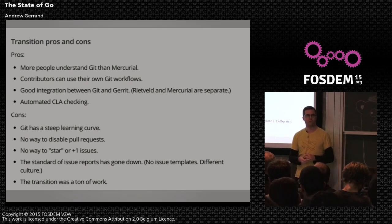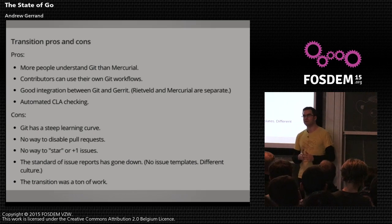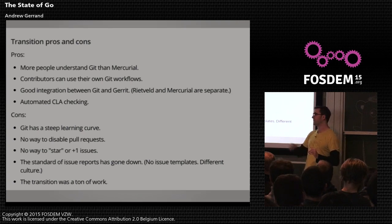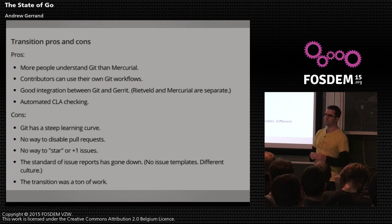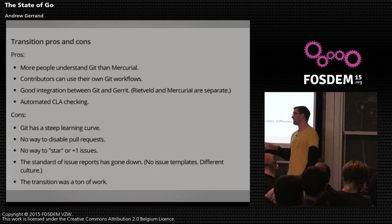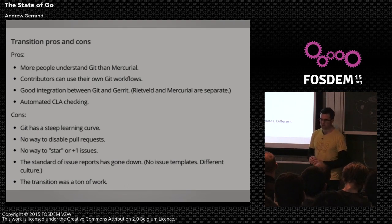There are a number of cons. Git has a steep learning curve — a lot of people used to our simple Mercurial workflow are now confused. GitHub has no way to disable pull requests, which I'll discuss. GitHub also has no way to star or plus-one issues — I suggest everyone tweet at GitHub asking them to implement this. Getting an email notification every time someone says 'plus one, this would be great to fix' is not useful. If you have written a comment like that, we'll actually delete them — it pollutes the discussion.